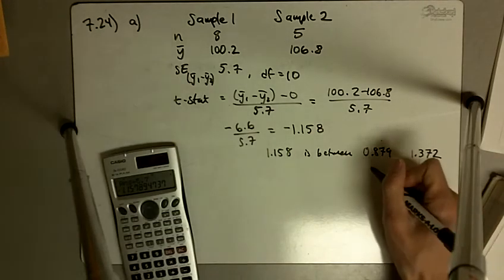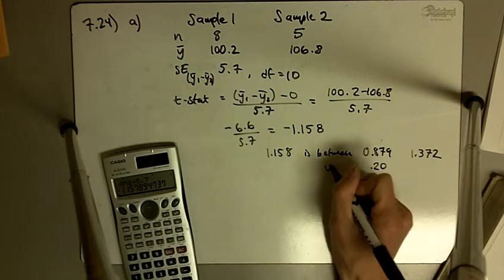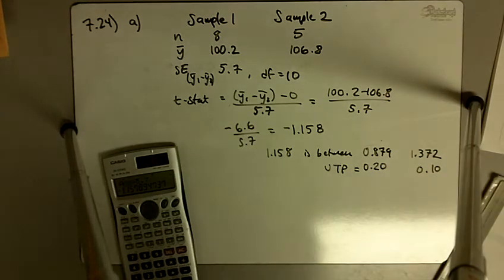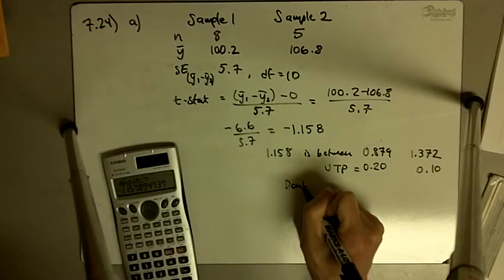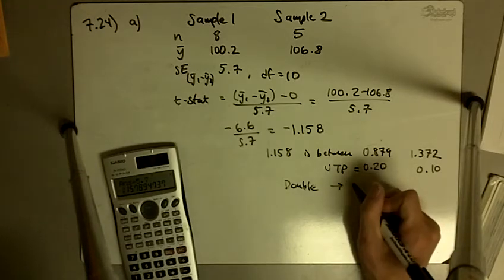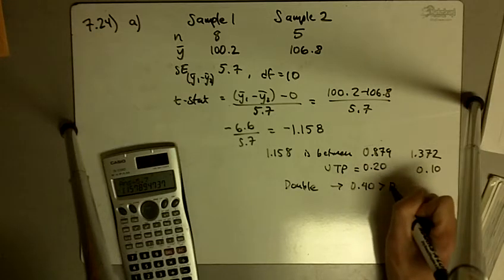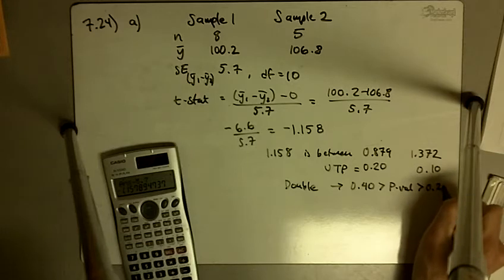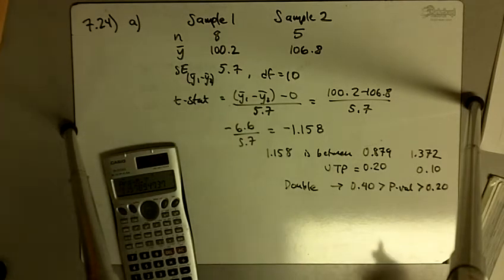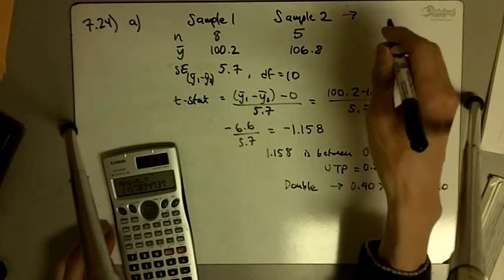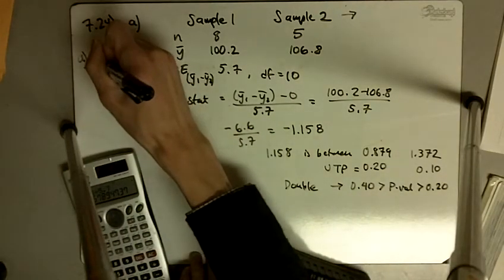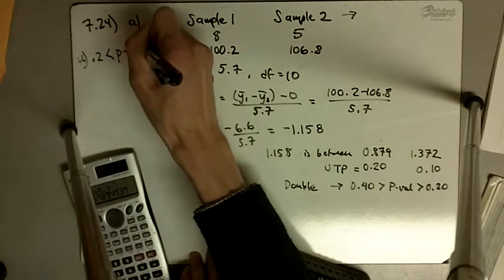0.879 corresponds to upper tail probability equal to 0.20, and 1.372 upper tail probability equals 0.10. Double that because it's a two-tailed p-value. That means our p-value is between 0.4 and 0.2. So part A: 0.2 less than p-value less than 0.4.